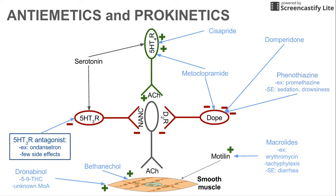Next, there's the 5-HT3 receptor antagonist, which does just as the name implies: it inhibits the 5-HT3 neuron that is inhibiting the acetylcholine neuron in the middle. So it's again like a double negative — inhibiting the inhibitor — and thus promoting gastric motility. One example is Zofran, a frequently used anti-emetic, and these drugs have the advantage of few side effects.